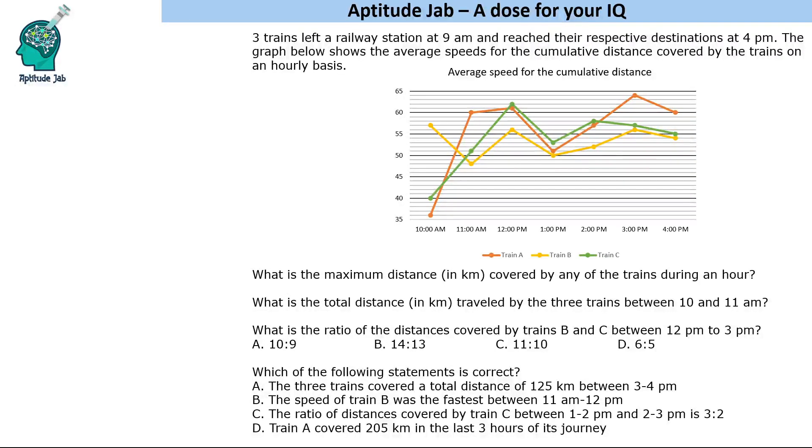Hello everyone, welcome to Aptitude Jab. This set is on bar graphs. It says that three trains left a railway station at 9 AM and reached their respective destinations at 4 PM. The graph below shows the average speeds for the cumulative distance covered by the trains on an hourly basis.